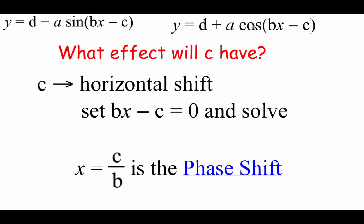We've got our general forms for our sine and cosine functions up at the top of the page. We've already looked at what A and B do to the graph. In this video, we're focusing mainly on that C value, but we'll have to include B as well. Since there's addition or subtraction happening inside our parentheses, we should recognize this as a left or right horizontal shift. To figure out how far we're moving, we take that Bx minus C inside the parentheses, set it equal to 0, and solve. We'll get X by itself — we end up getting C over B. That is called a phase shift, telling us how far we move either left or right.